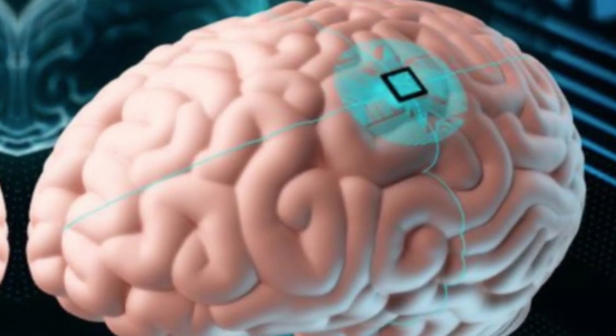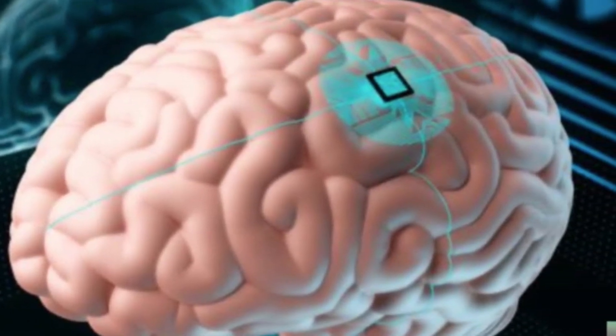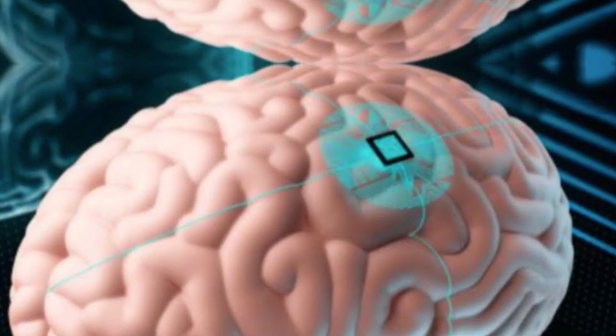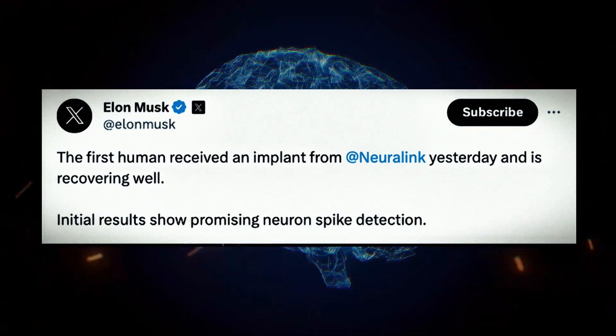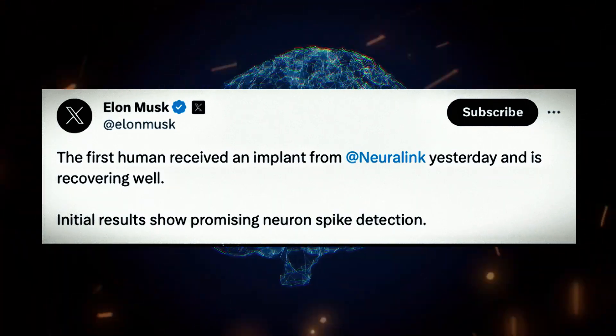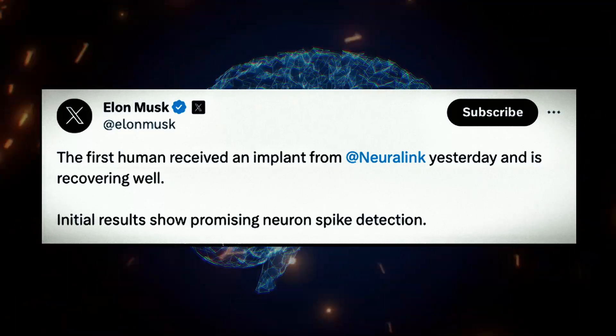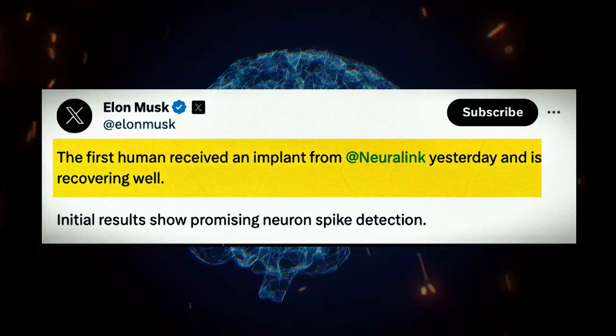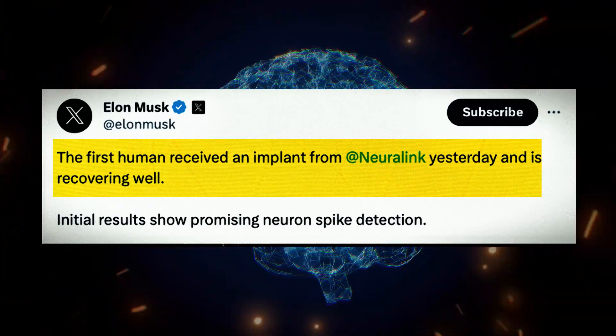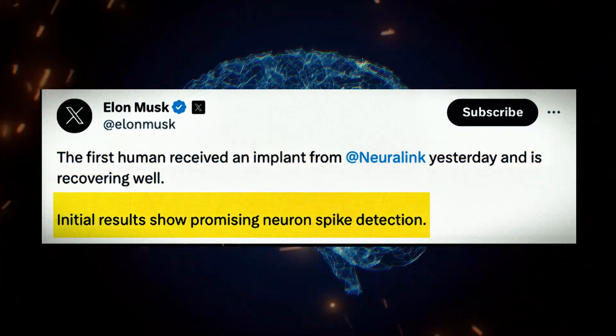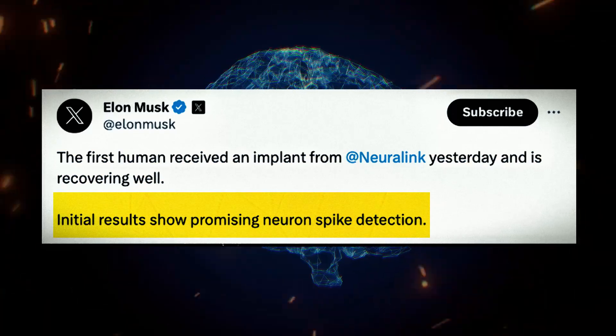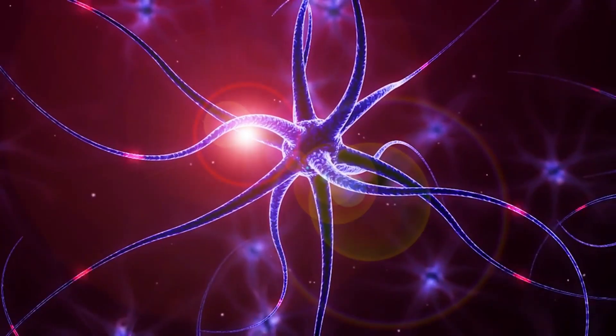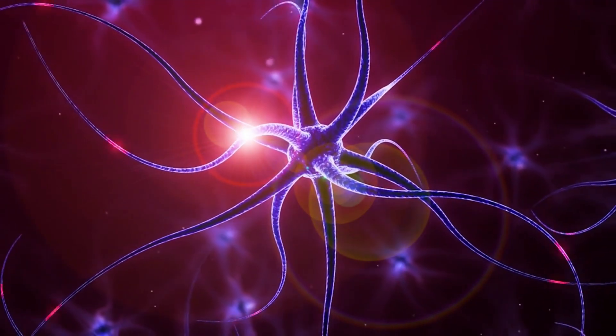And now, Neuralink has announced that it has successfully implanted its first chip in a human brain. The announcement was made by Elon Musk himself, on his social media platform X, formerly known as Twitter. Musk said that the first human received the implant on Sunday, January 28, 2024, and that the initial results show promising neuron spike detection, meaning that the device can pick up the signals from the brain cells.